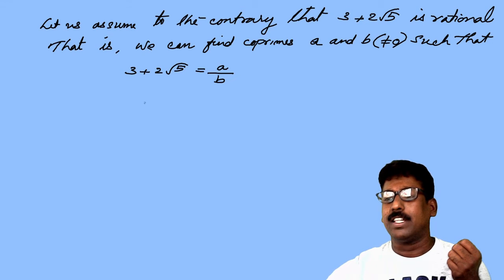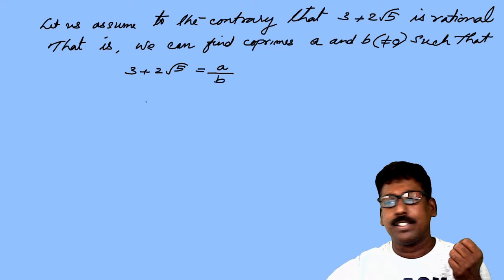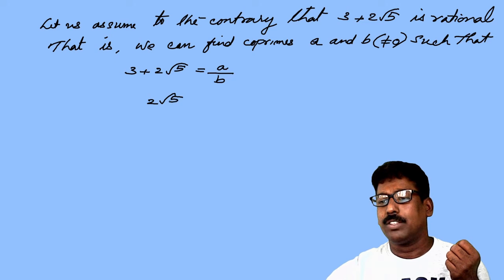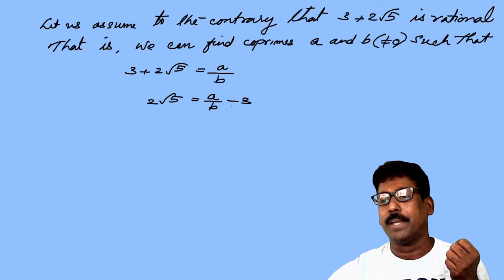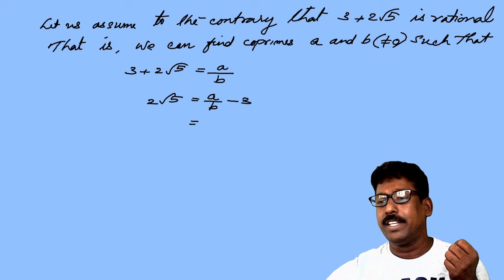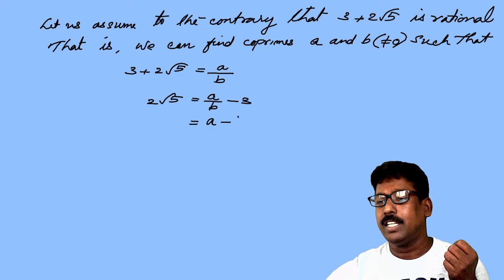Now, transpose 3 to the other side. What will you get? 2 root 5 equals a by b minus 3. While transposing 3 to the other side it will be minus 3. Now simplify it — that is, a minus b into 3, giving us a minus 3b by b.